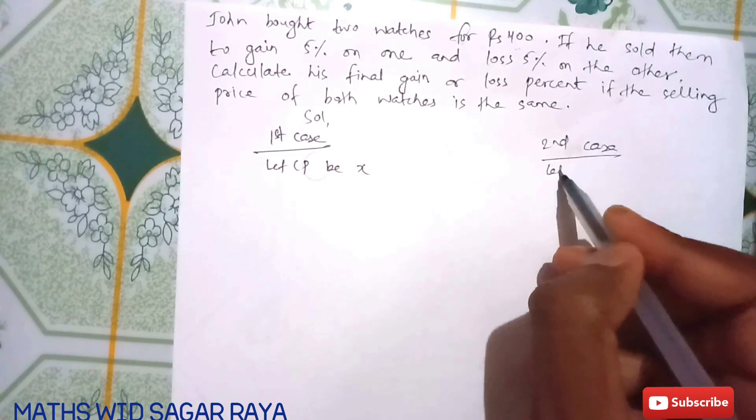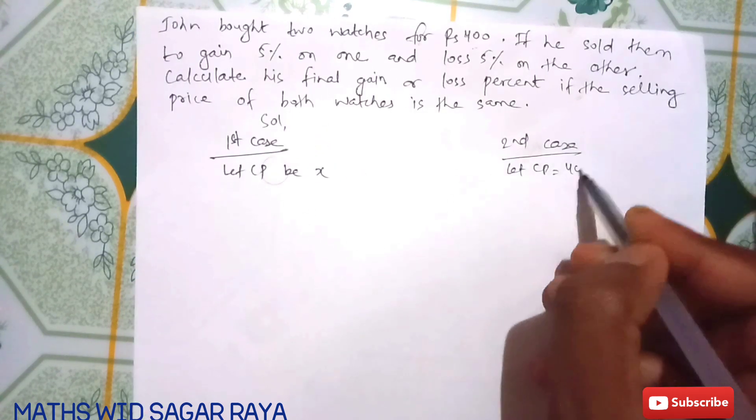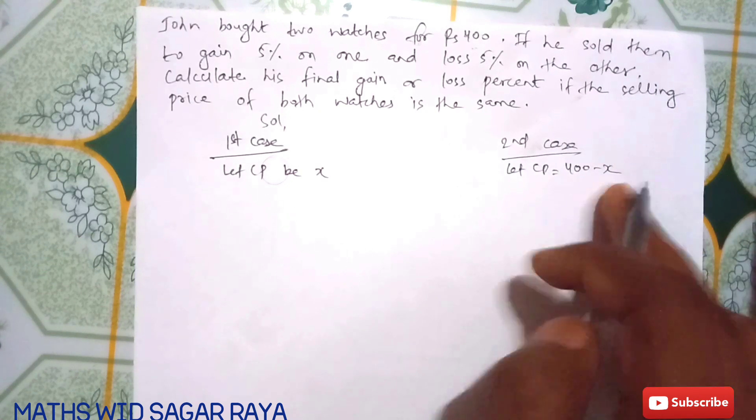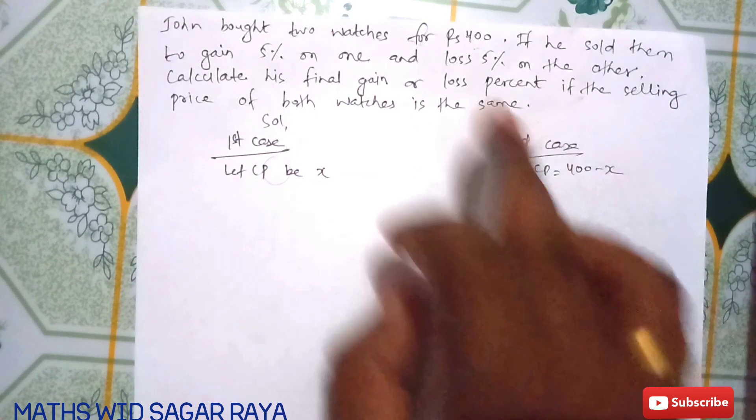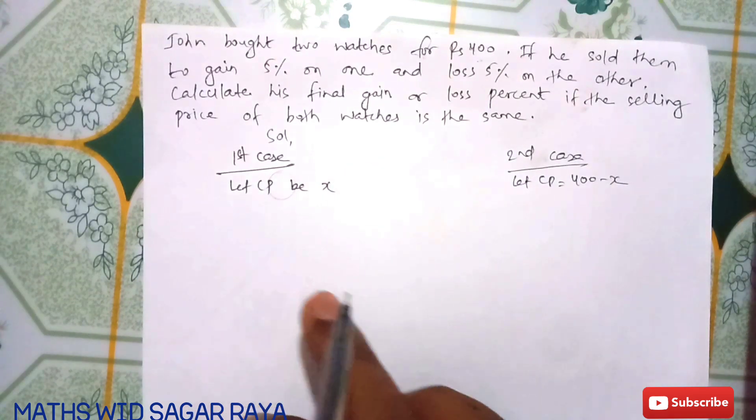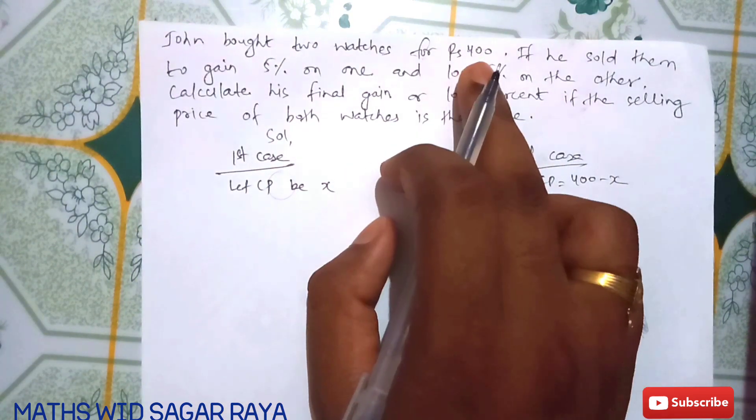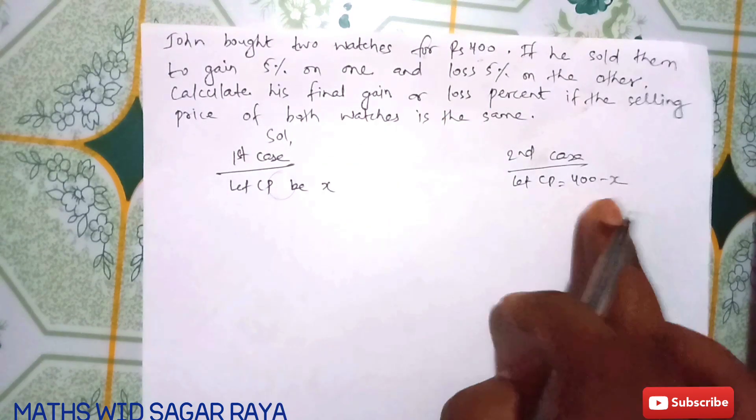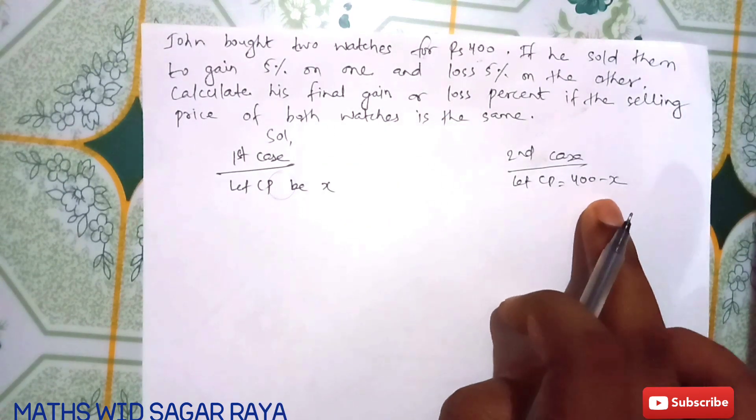If you add both, you get 400. Remember, the CP is not half of 400, so one will be X and another will be 400 minus X.